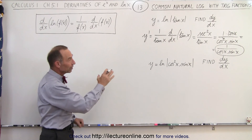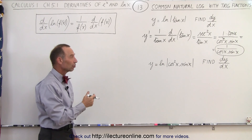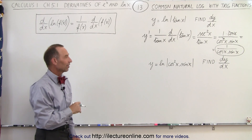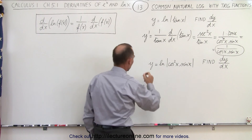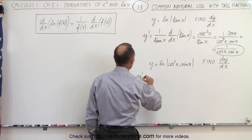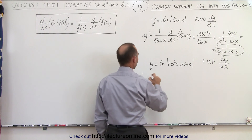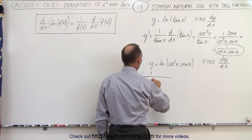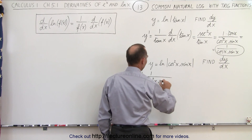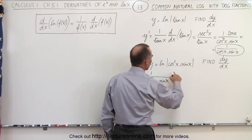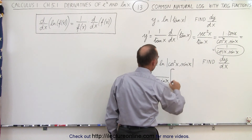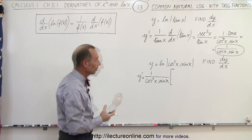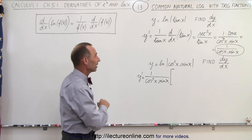Now we'll do the same again with the second example, where we have the natural log of cosine squared of x times sine of x. We use the same principle: y prime is equal to 1 over cosine squared of x times sine of x, times the derivative of this. For the derivative, we need to take into account the product rule and the chain rule.